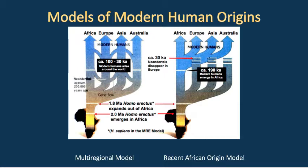Models of modern human origins was a debate raging in the 80s and 90s, more or less settled now. Two primary models were debated: the multi-regional model and the recent African origin model. Both start in Africa with a Homo erectus population. Both have Homo erectus populations arising in Africa and then moving out. After 1.8 million years ago, when Homo erectus left Africa, the two models diverge.